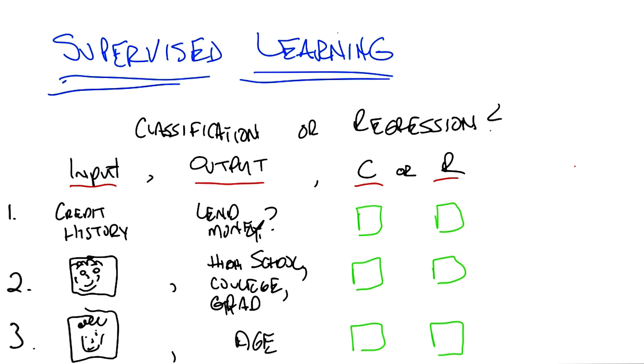So the first question, the input is credit history, whatever that means: the number of loans that you have, how much money you make, how many times you've defaulted, how many times you've been late, the sort of things that make up credit history. And the output of the learning algorithm is whether you should lend money or not. So you're a bank and you're trying to determine whether given a credit history, I should lend this person money. That's question one. Is that classification or is that regression?